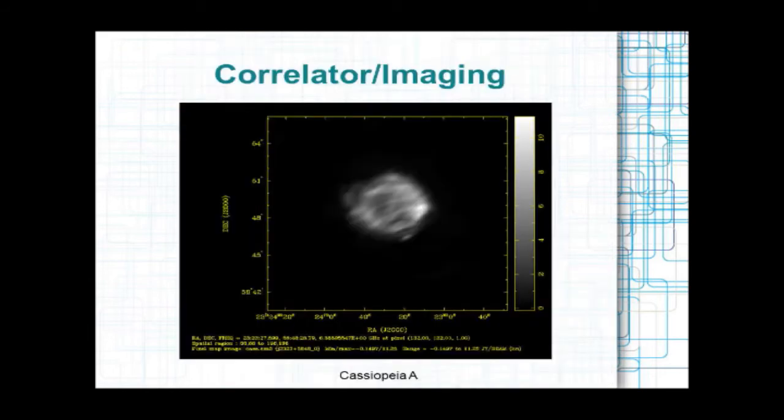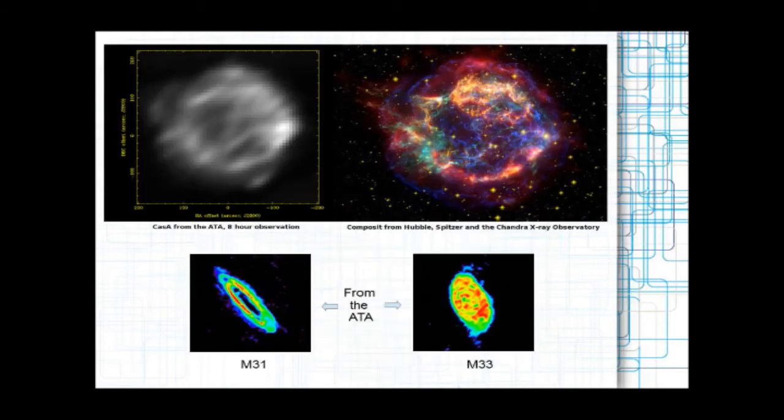Another thing we can do, other than just looking for narrow band signals, we have an interferometer, which means we have all these 42 dishes spread around. We can combine their signals with each other and actually create images of the sky like a camera. So for instance, here's something I did a couple years ago, Cassiopeia A. This was from an eight hour observation, and it looks really fuzzy, but if you actually look at it compared to the really expensive one there on top,